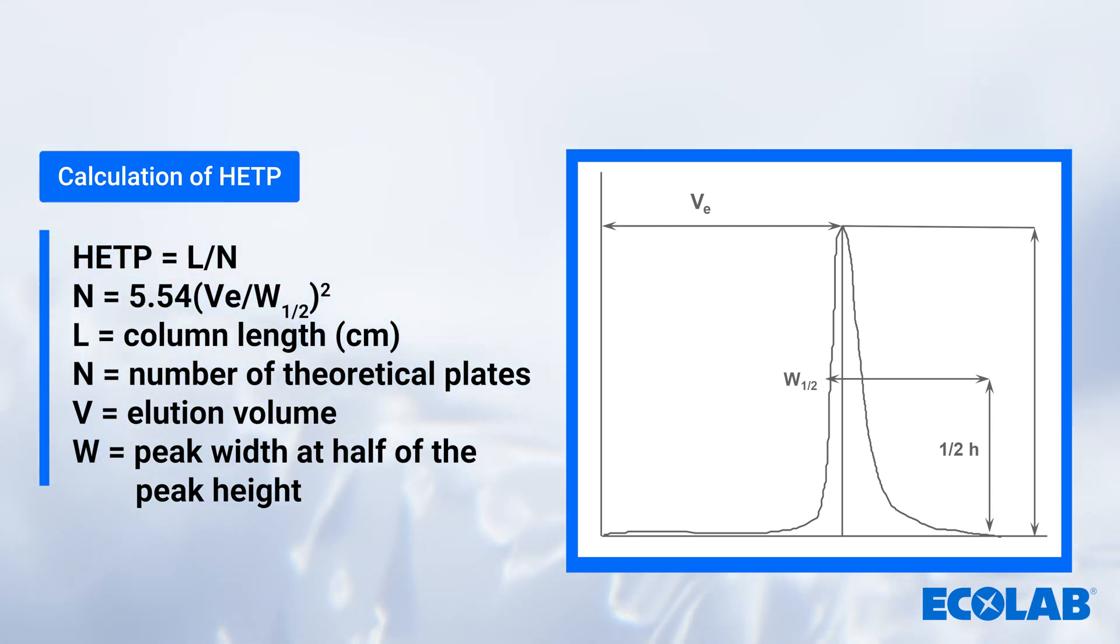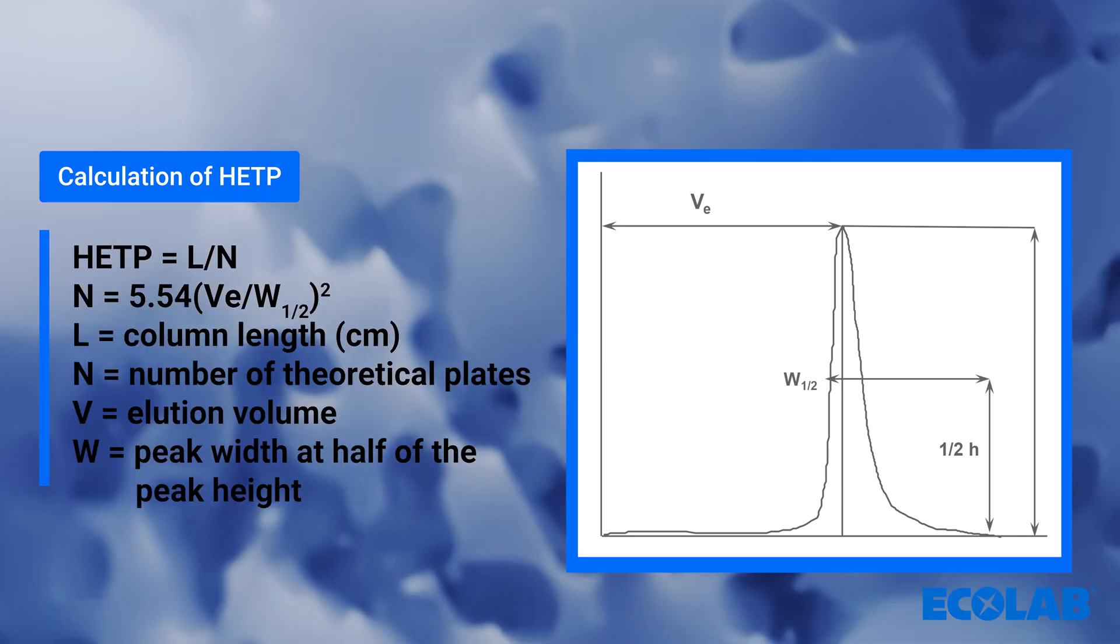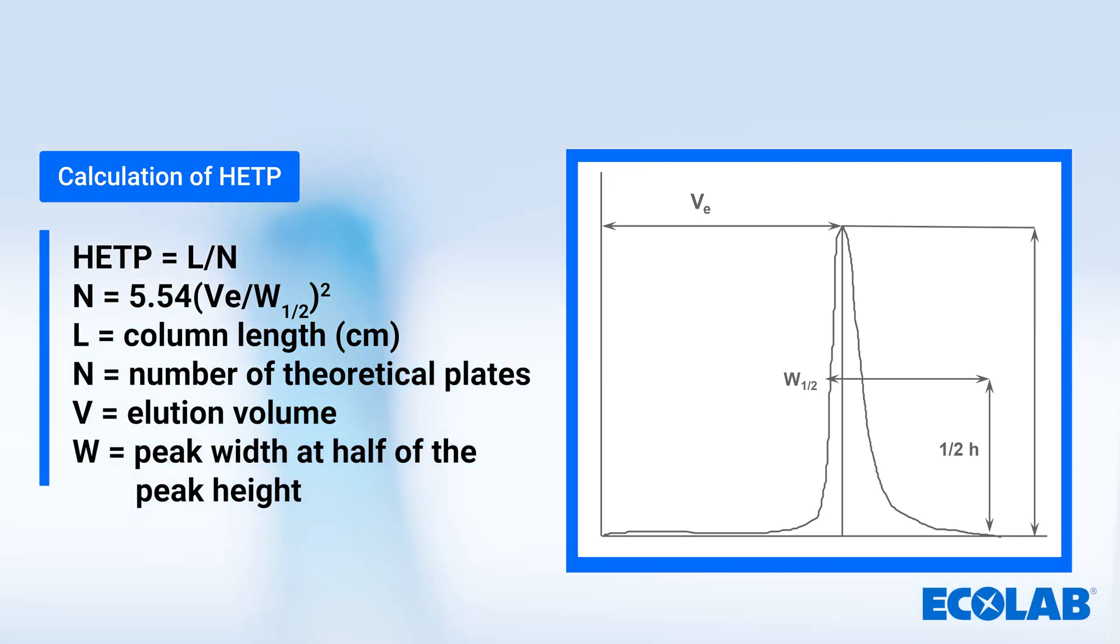To calculate the HETP, we need to look at the width of the peak at half height. This value is used to calculate the number of theoretical plates, or N. The higher the number, the greater the efficiency of the column. This is then converted into HETP by dividing the length of the column with the number of theoretical plates.